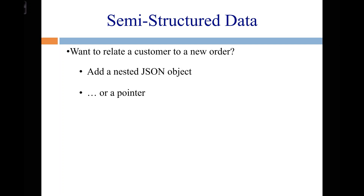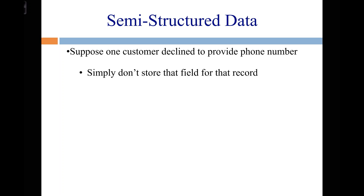Say you want to relate a customer to a new order. In a relational database, you'd have a customers table, an orders table, and a foreign key between them. In a document model, if a customer has no orders, fine. If they just made a new order, just put a new order object inside that customer. Or you could do it the pointer way, like the relational model would. Say someone declines to provide a phone number — just don't add that field to the JSON object representing that customer.